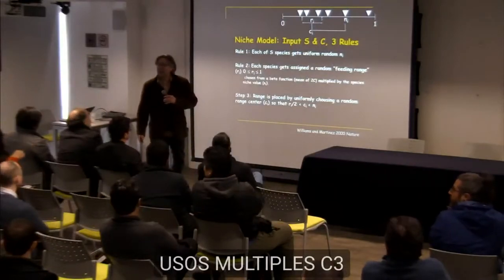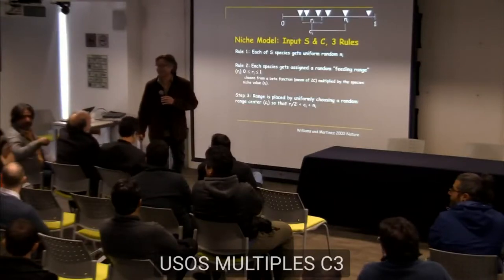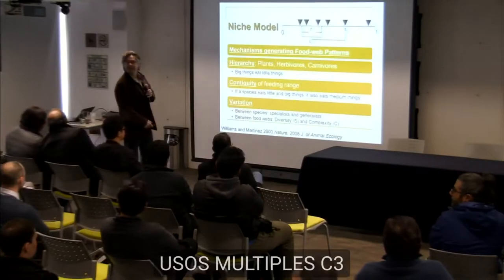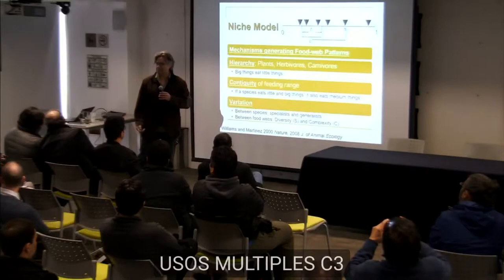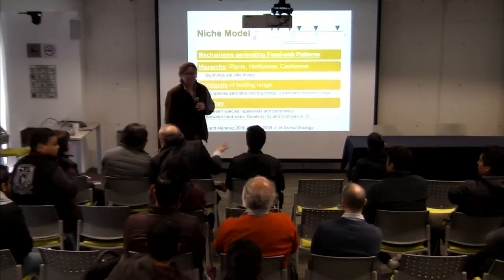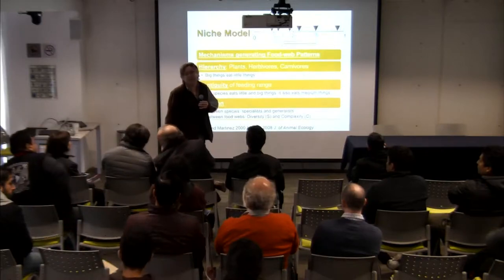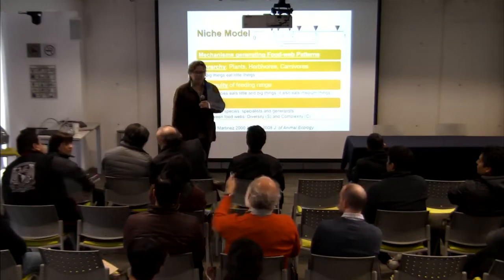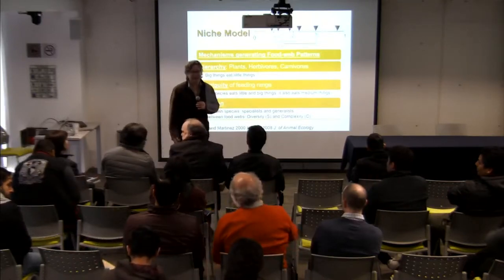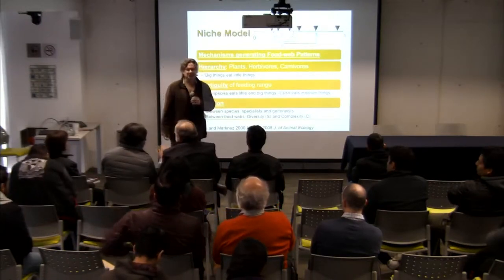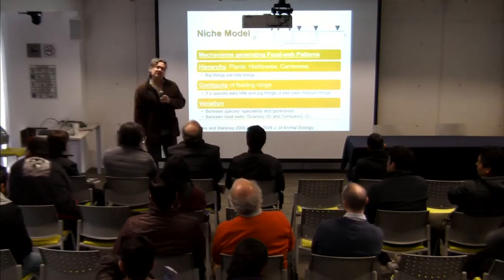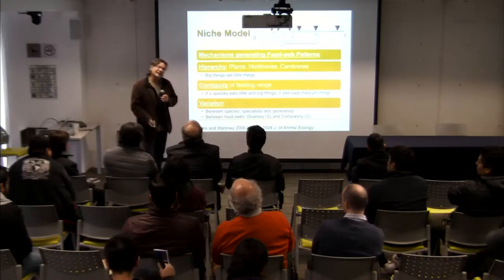Question: in the previous slide, what do you mean by complexity? Answer: just connectance. Question: why did you choose a beta distribution and not some other distribution? Answer: it was about the simplest function we could come up with that did the work — the beta function is very flexible. It's a way to choose parameters to do what you wanted. Other people have done versions of the niche model with an exponential function that works a little differently — it's the flexibility of the beta function that we took advantage of.